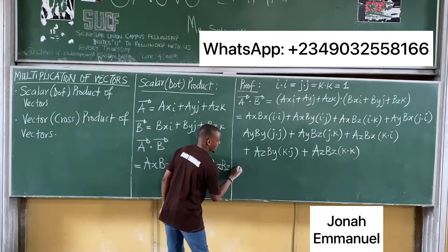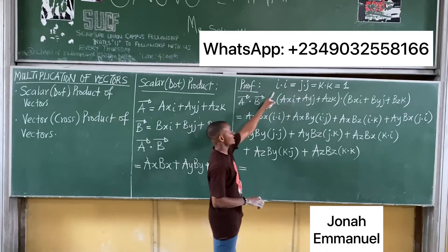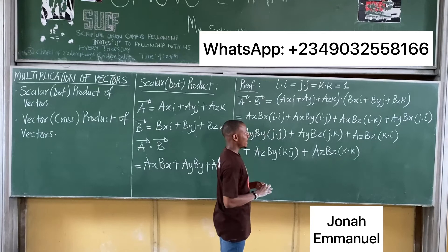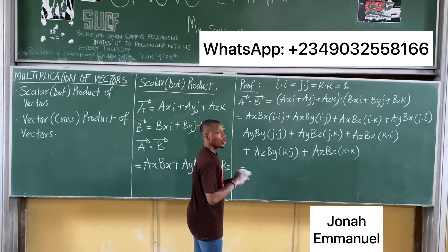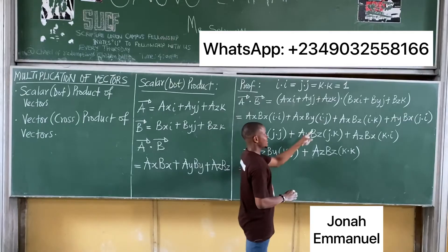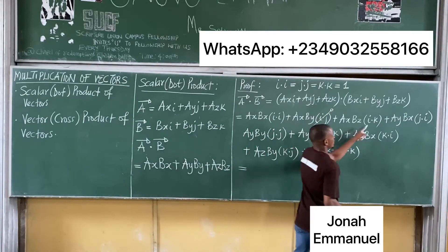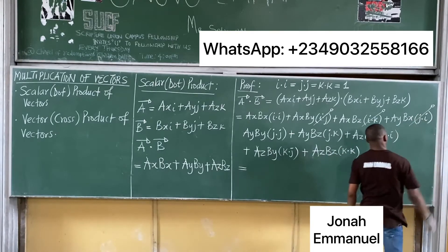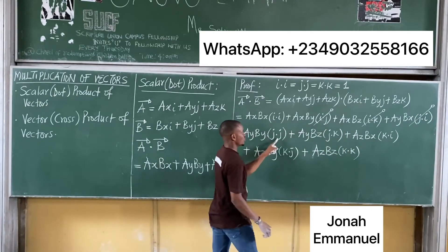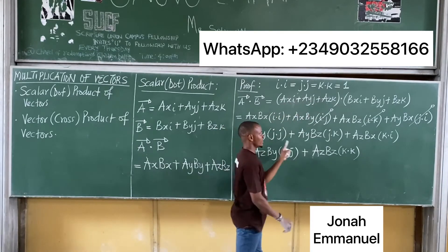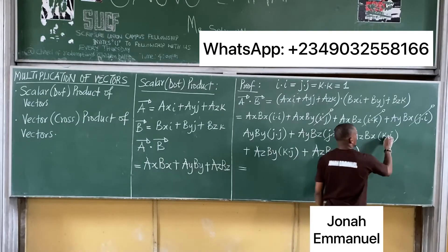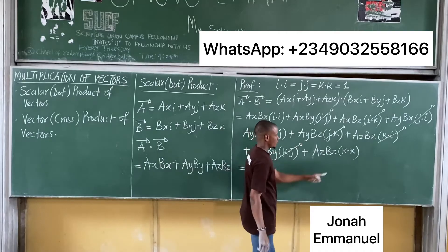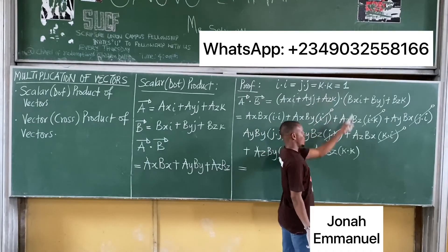Now let's bring in the condition. We said i·i equals 1, so that term gives you 1. Any dot product that is not i·i, j·j, or k·k automatically becomes 0. So i·j gives 0, i·k gives 0, j·i gives 0. The j·j term gives 1. Then j·k gives 0, k·i gives 0, k·j gives 0, and k·k gives 1.